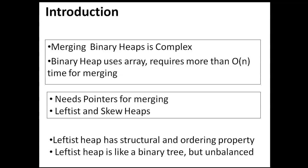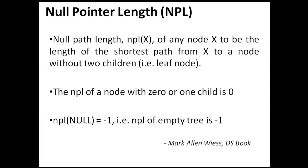The new data structure is named as leftist heap or skew heap. Leftist heap has structural and ordering properties as we learnt in binary heaps. It is like a binary tree but it is not balanced. As we learnt in AVL tree for determining the balance factor, here we need to determine NPL for each node before we do the merging. NPL is the null pointer length and it is defined as the length of the shortest path from that node to the leaf node. NPL of a node with 0 or 1 child is 0. NPL of an empty tree is minus 1.